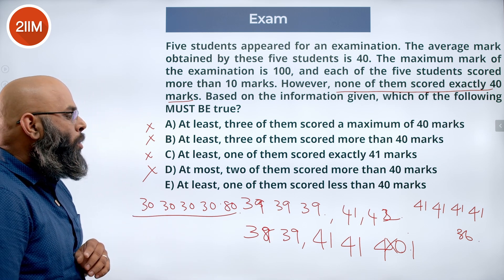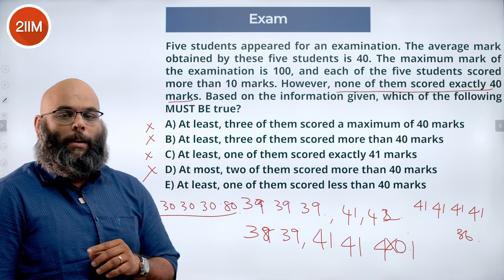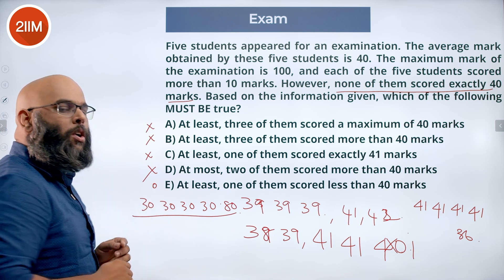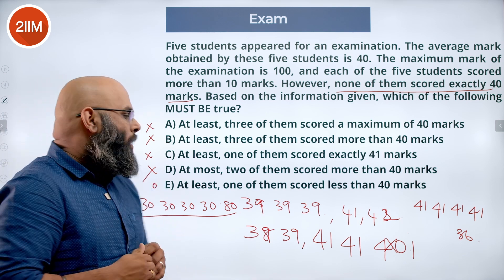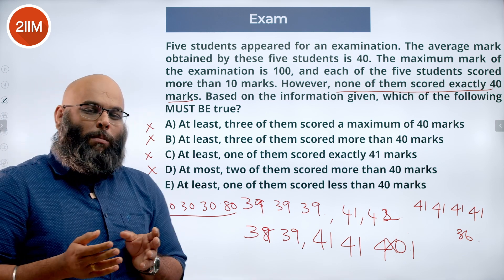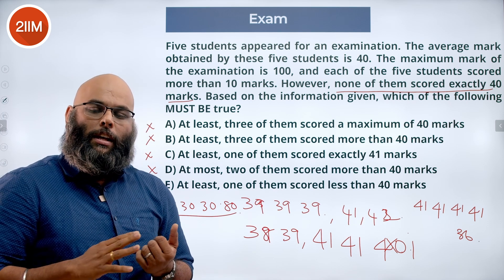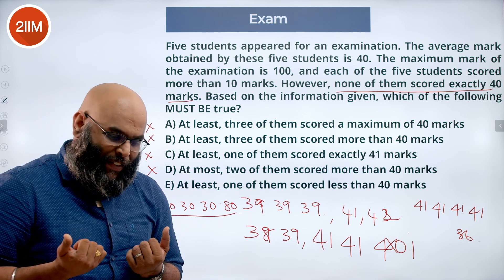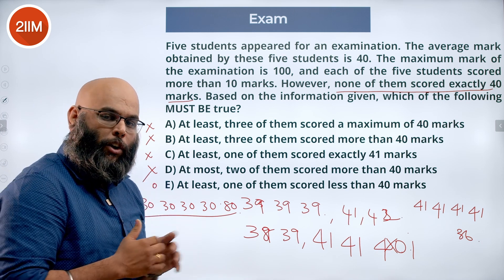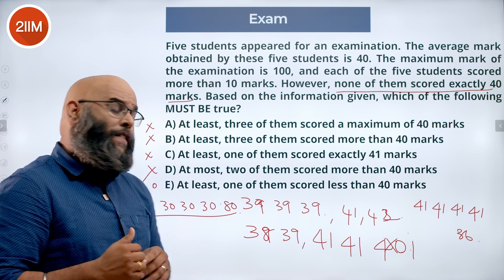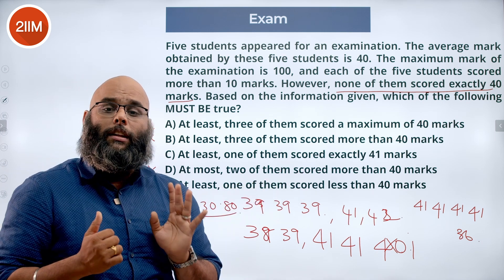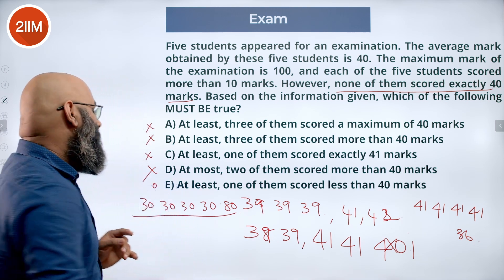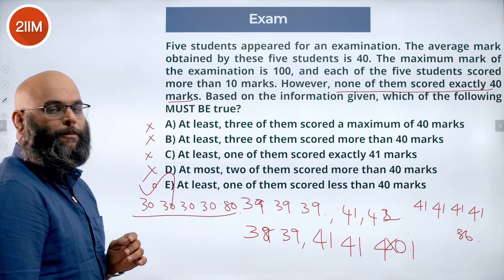The fifth option says at least 1 of them scored less than 40 marks. Since none of them scored exactly 40, they are either above or below 40. If everyone scored more than 40, the average would definitely be more than 40 — contradicting the given average of 40. Therefore, at least 1 person must have scored less than 40. This is definitely true.